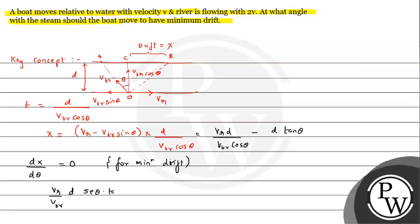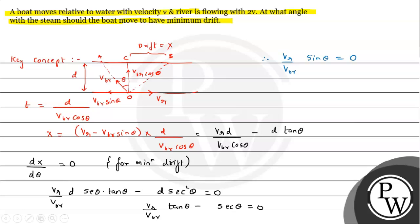Dividing through by sec θ gives: (v_r / v_br)·tan θ − sec θ = 0. Further simplifying — since sec θ = 1/cos θ and tan θ = sin θ/cos θ — the cosines cancel, leaving: v_r / v_br · sin θ = 1. This is the key result.